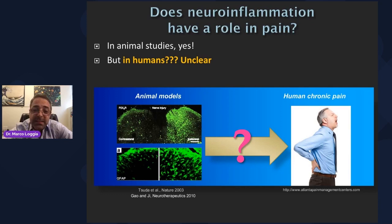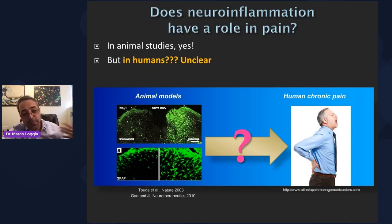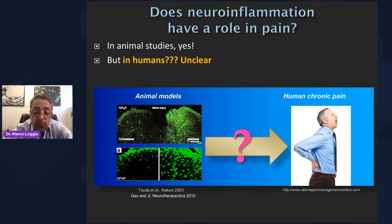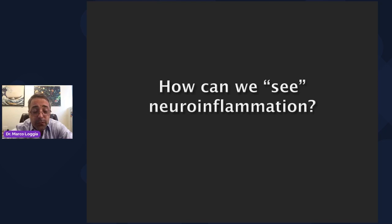The problem is that in humans we don't know to what extent neuroinflammation is linked to pain. All this beautiful animal model work is really promising — when glial cells become activated, animals show pain behavior, and if you block these responses with drugs or other mechanisms, the pain behavior can be reduced. So maybe we can use the same strategy and target neuroinflammation in humans with chronic pain. But until recently there was very scanty information about whether neuroinflammation happens in chronic pain patients, and we wanted to find out.